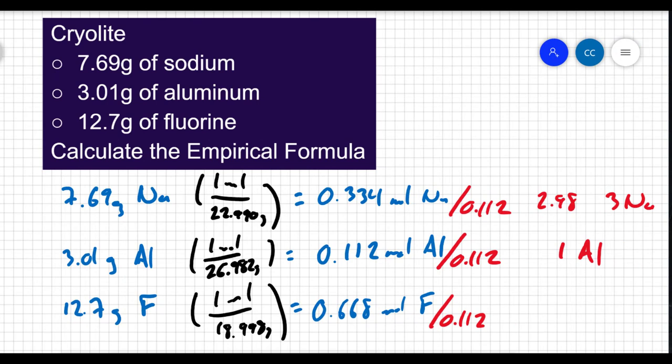And when I do 0.668 divided by 0.112, I get 5.96. Again, that's really close to 6. So I'm going to say that that is 6 fluorines. You're going to have to do just a little bit of rounding in order to get to whole numbers.